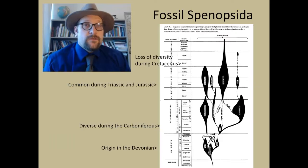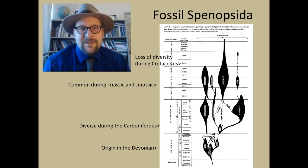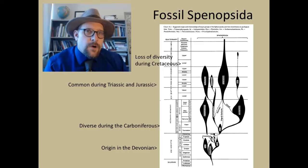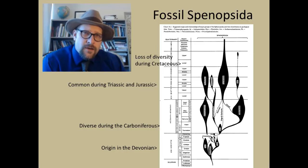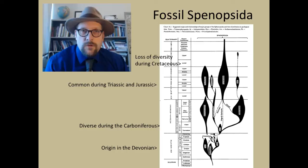The fossil record of Sphenopsids goes all the way back to the Devonian, when they originated alongside the earliest vascular plants. During the Carboniferous they became very diverse, including the group called the Calamites, which were rather large and dominant in the Pennsylvanian. During the Permian, and even across into the Permian-Triassic, the horsetails did rather well, with Equisetites becoming the dominant group.